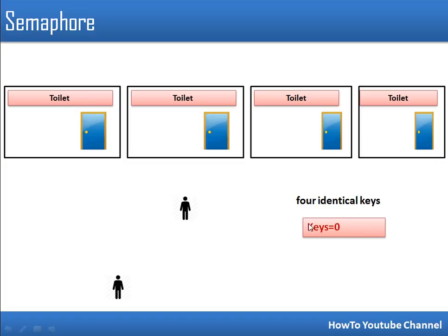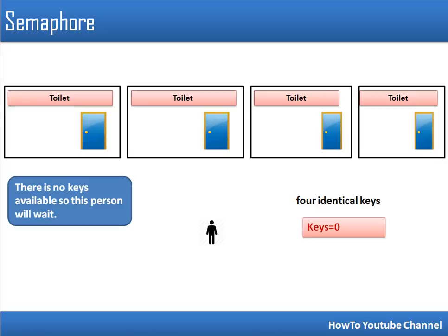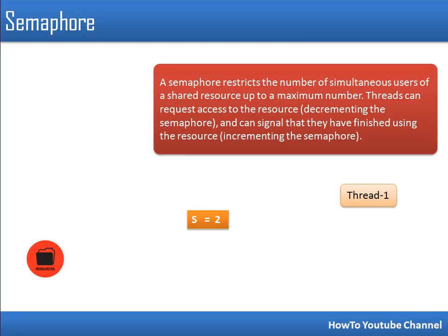This variable specifies how many keys are available. When no keys are available and a person tries to access a toilet, they have to wait. This variable tells us whether there will be waiting or whether access to the facility is allowed. In semaphore, if there is no key the person has to wait. Semaphore is used to control how many simultaneous accesses are allowed.